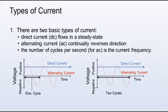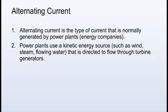There are two basic types of current. Direct current, or DC, flows in a steady state, whereas alternating current, or AC, continually reverses direction. The number of cycles per second for AC is the current frequency. Alternating current is the type of current that is normally generated by power plants, i.e. energy companies. Power plants use a kinetic energy source such as wind, steam, or flowing water, directed to flow through turbine generators.